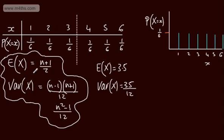So that's applying the formulae. The proof of both of these is certainly beyond the scope of the course, but using and applying them is essential. For these formulae to hold, we need to ensure that we're going from 1 to n. It won't always be the case that our discrete uniform distribution goes from 1 to n, but we can use linear relationships to convert and work backwards.